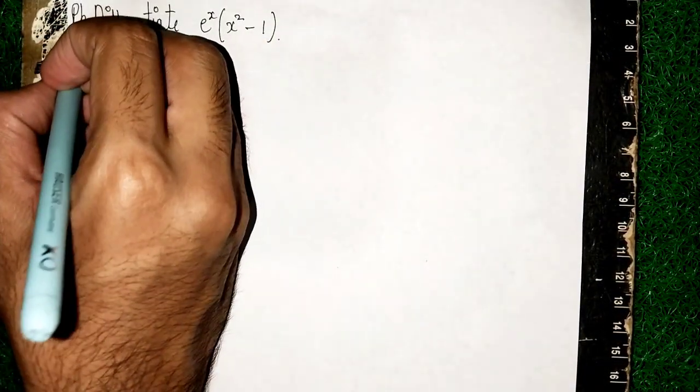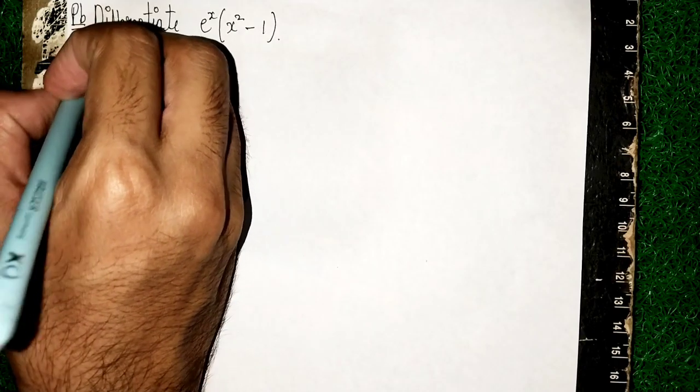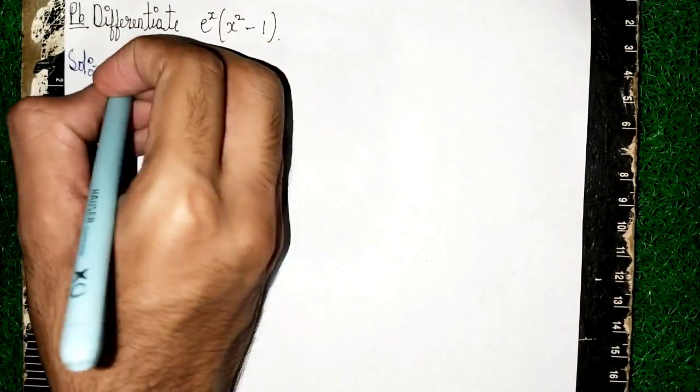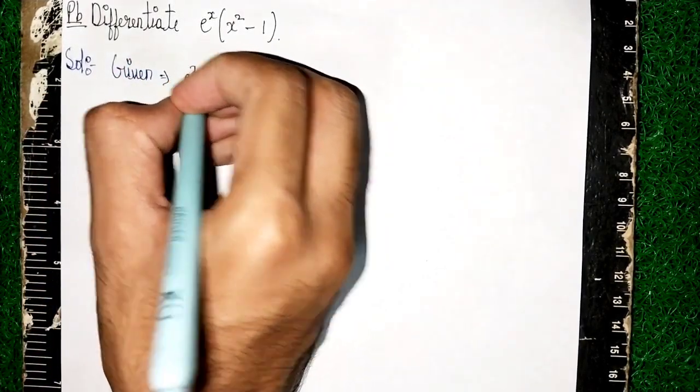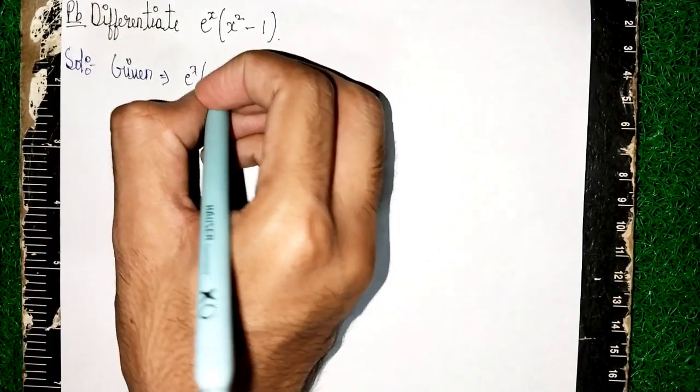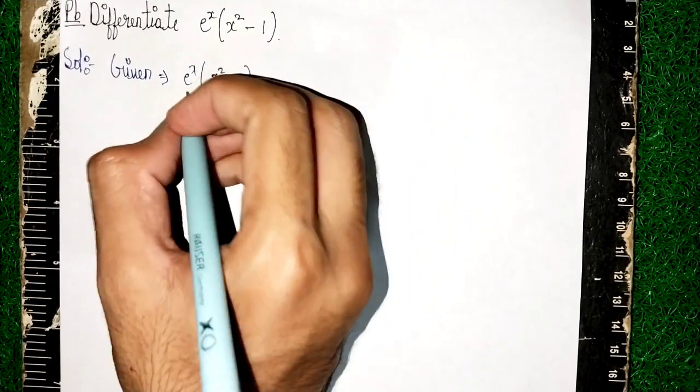So first write solution. After stating what we will write: Given. So right here, given. Given is what? e^x into x^2 minus 1. So here it is multiplying.